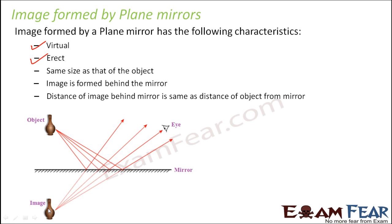In a plane mirror, every time the image will be formed on the other side of the mirror, that's why the image would be virtual. It is erect and the same size as the object. That is the reason why the mirrors in our homes are all plane mirrors — when you are standing in front of the dressing table, you do not want a small or big image of yourself.